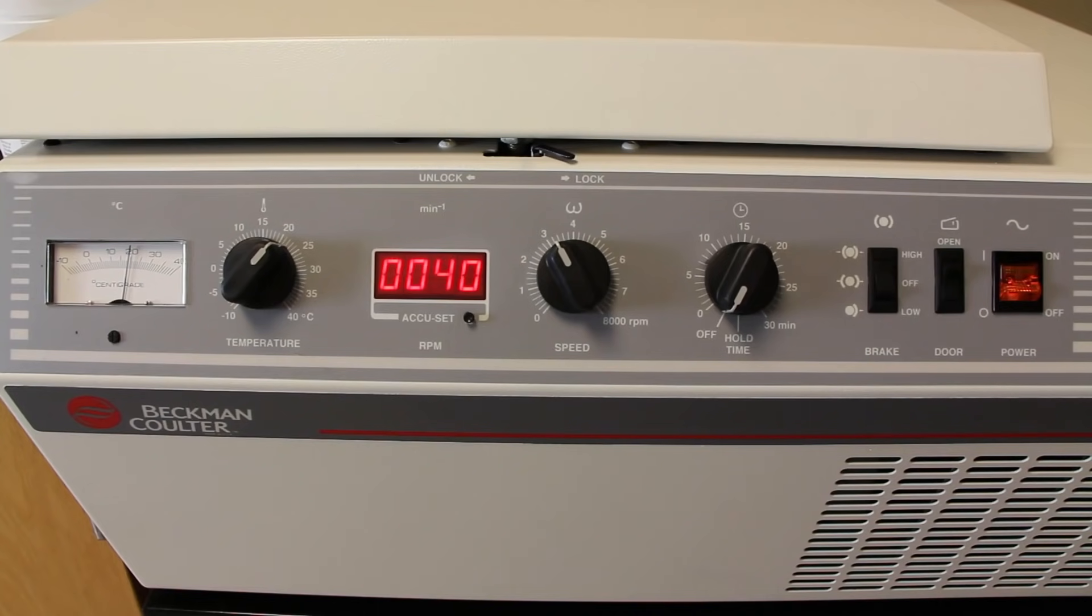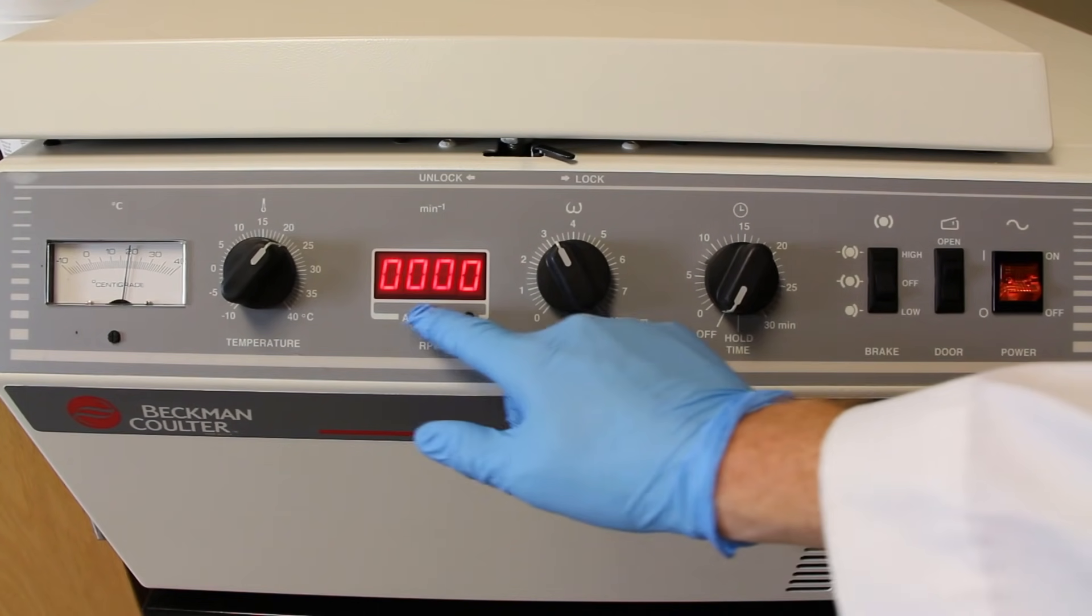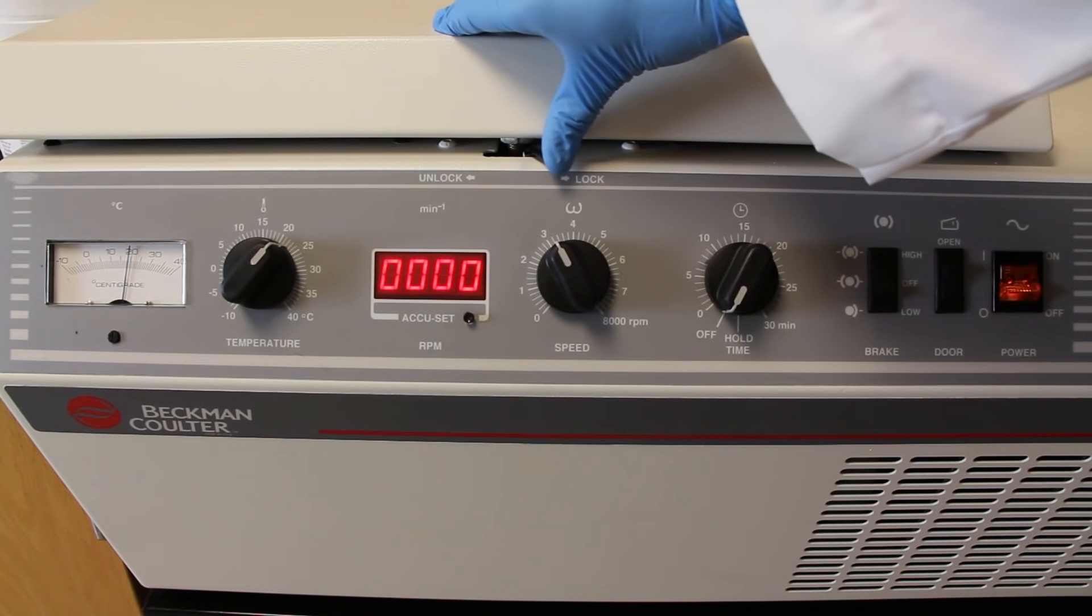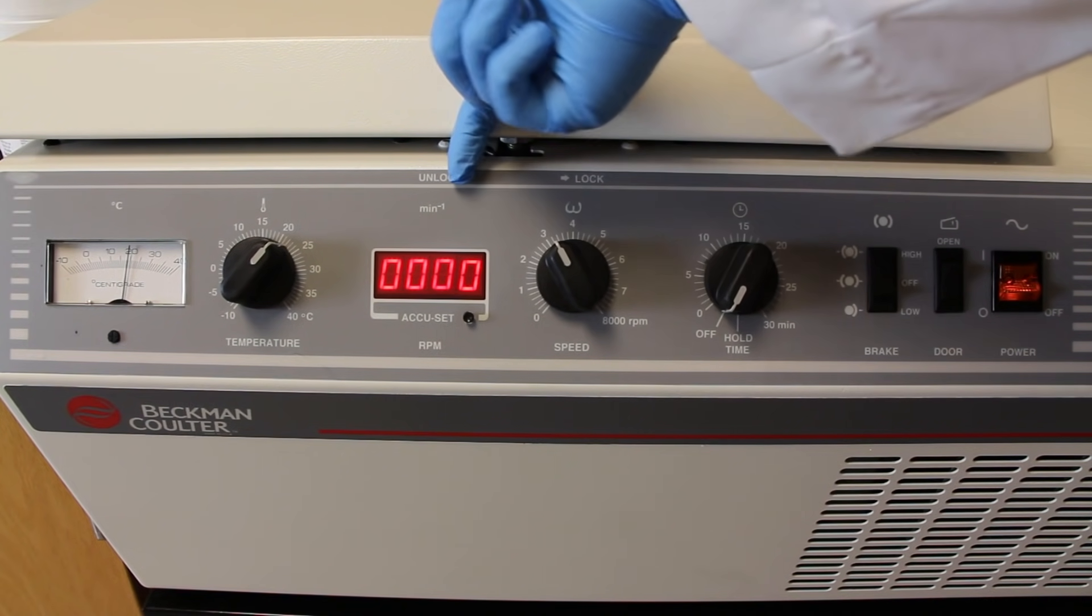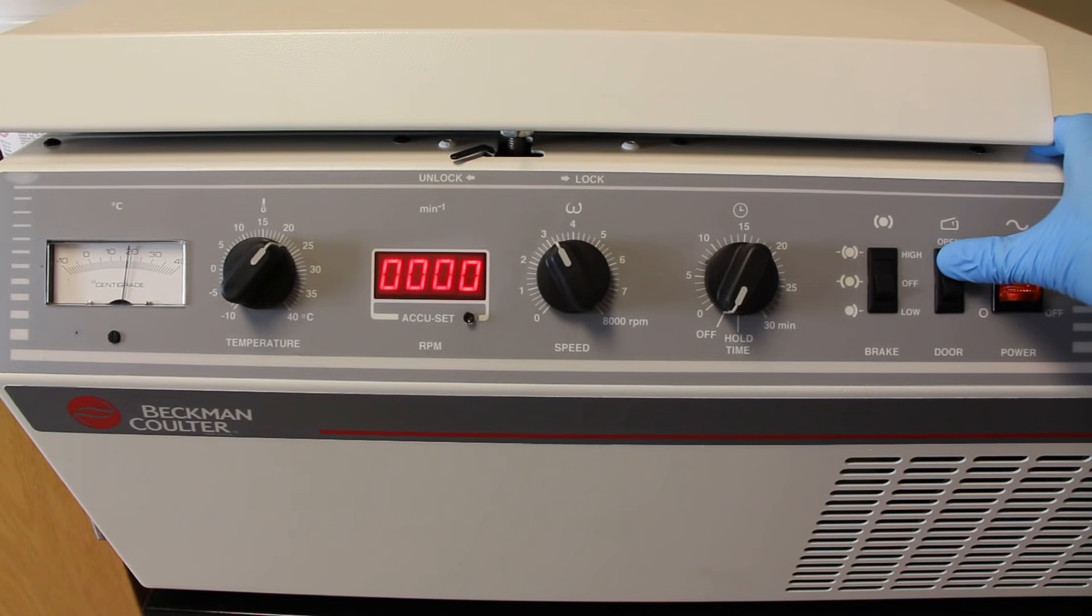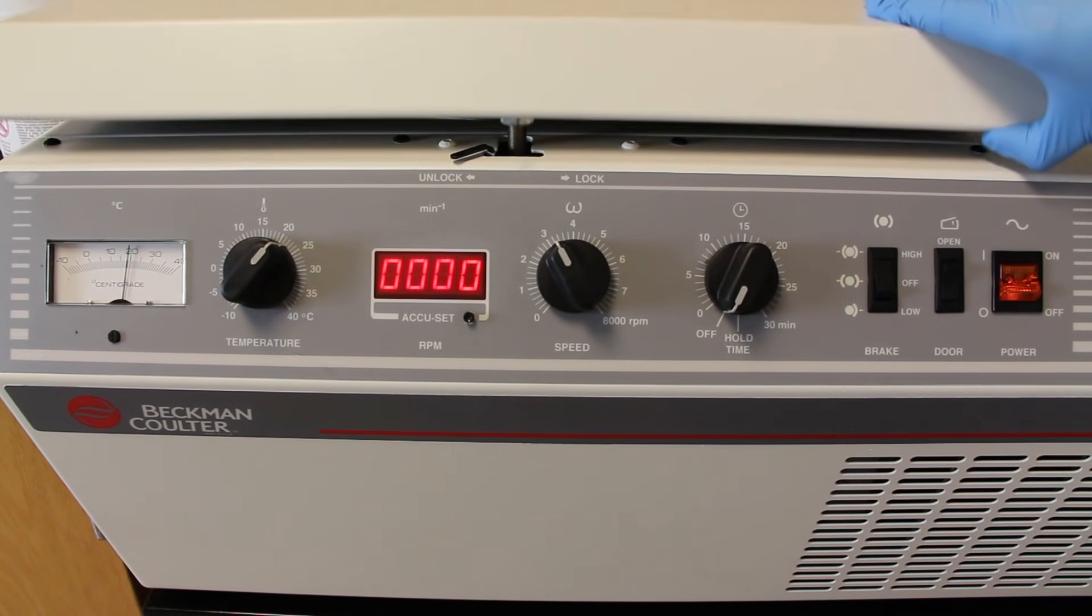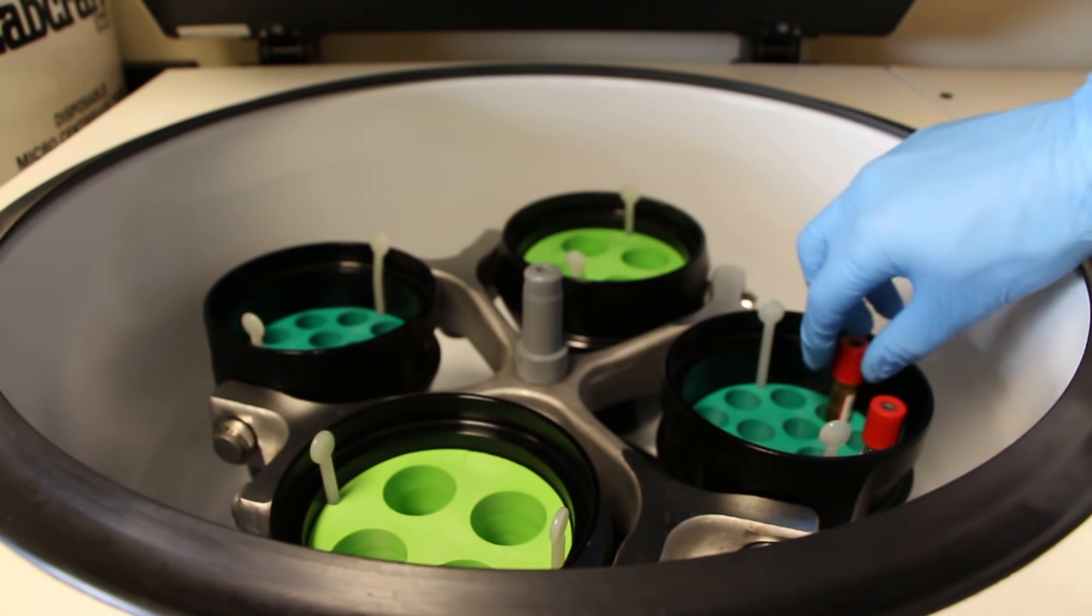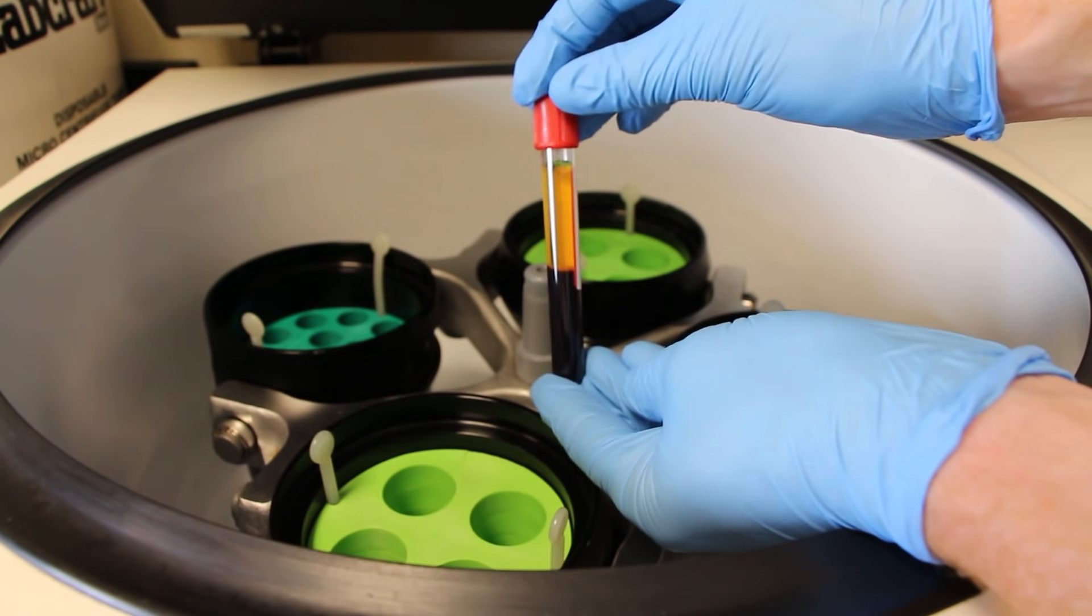Once the centrifuge has stopped, you can open it. You're simply going to flip the switch back on the locking mechanism on the lid, and then there's a button on the front of the centrifuge that you have to push to actually open the lid, so there's two different locks. Once both those locks are undone, you can lift the lid, take the samples out, and you can use them however you plan on using them.